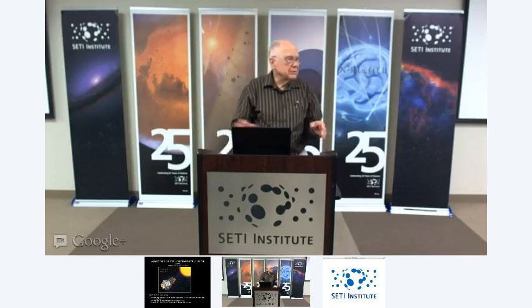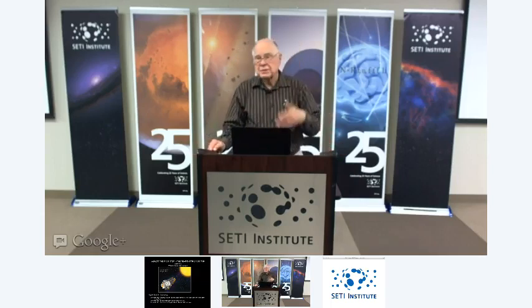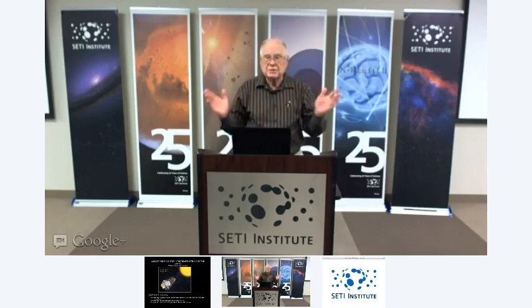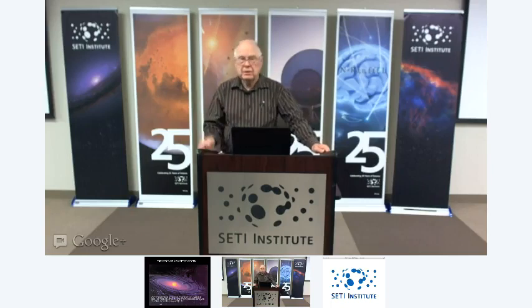We'd also like to understand the distribution of planet sizes — how many are small like the Earth, twice the size of the Earth, and so on. We'd like to understand their orbital distributions, orbital periods, and semi-major axes, and ultimately associate what we find with the kind of stars they orbit, because stars come in a huge variety of sizes, temperatures, ages, and compositions. To frame our ideas, let's look at a sketch of how planetary systems develop.